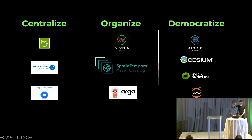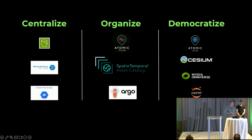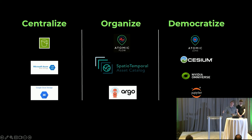We centralize our company on three core principles: centralize, organize, and democratize customer data. By centralize, we mean having customer data stored in a cloud data store accessible through the internet — things like AWS S3, Azure Storage, and GCP Storage. Our organization layer is focused around our product called Atomic Flow, a processing framework for bringing compute onto the data, extracting metadata, and cataloging it in the open spec, the SpatioTemporal Asset Catalog, or STAC.